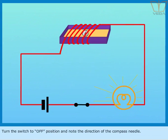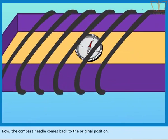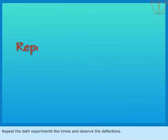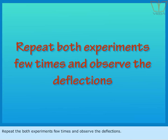Turn the switch to off position and note the direction of the compass needle. Now, the compass needle comes back to the original position. Repeat both experiments a few times and observe the deflections.